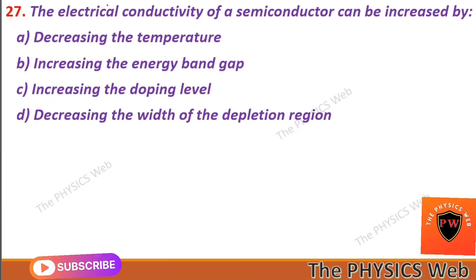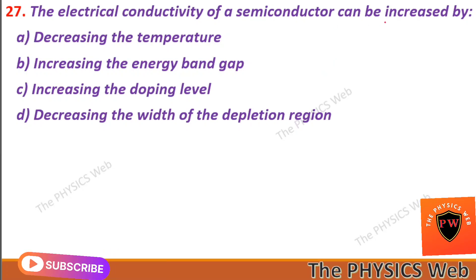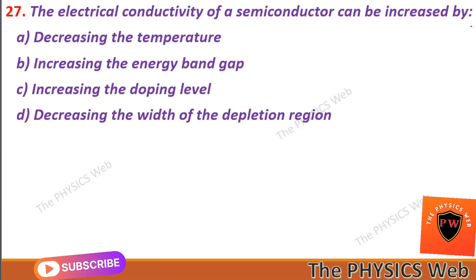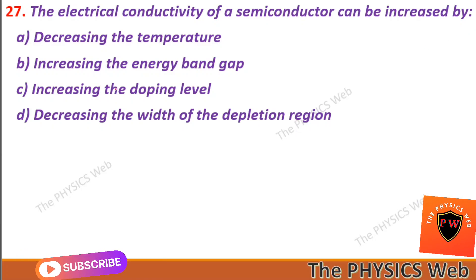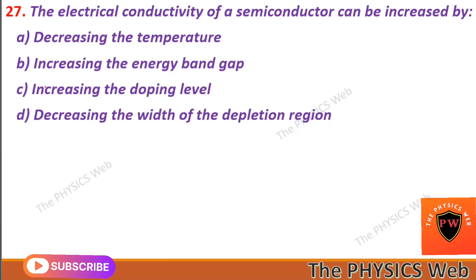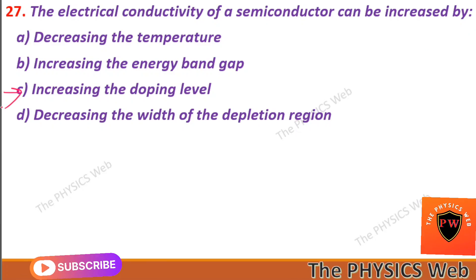Next, question twenty-seven: the electrical conductivity of a semiconductor can be increased by increasing the doping level. So C is your correct option.